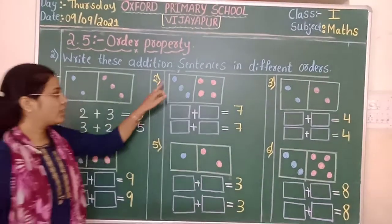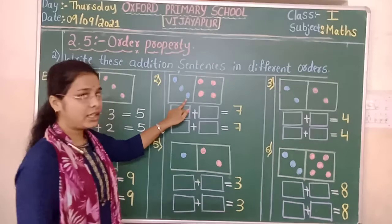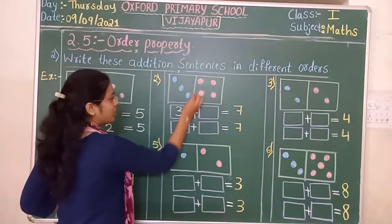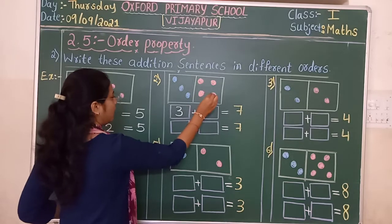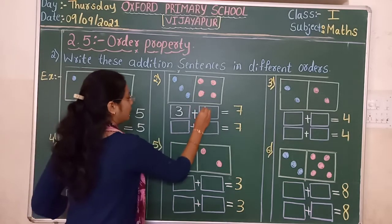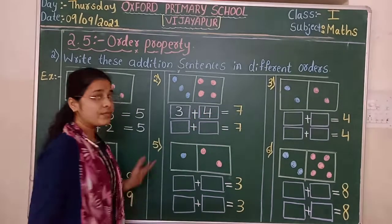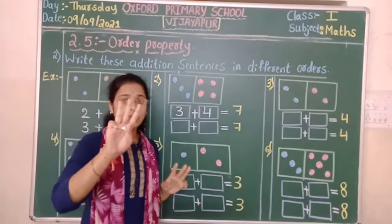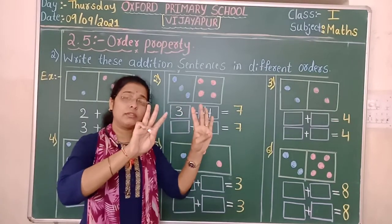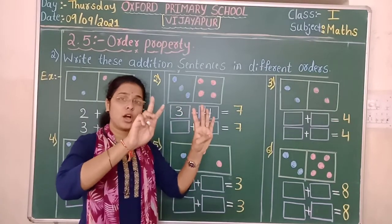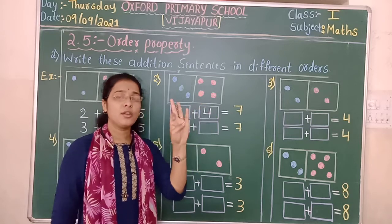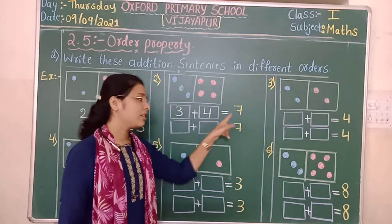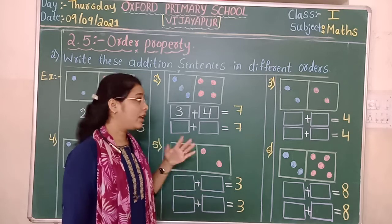Going to the next example. We have three dots in the first box and four dots in the second box. Three plus four — counting gives us seven. The sum we get is seven.